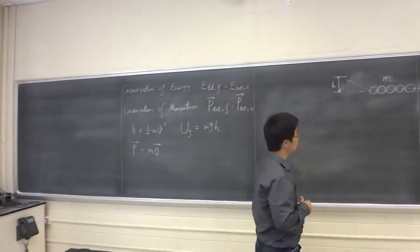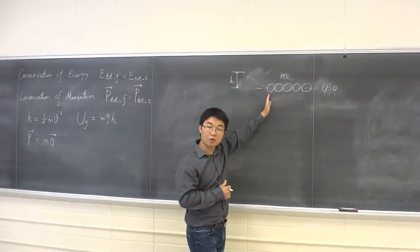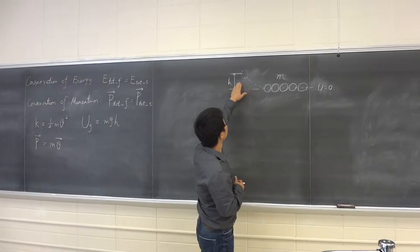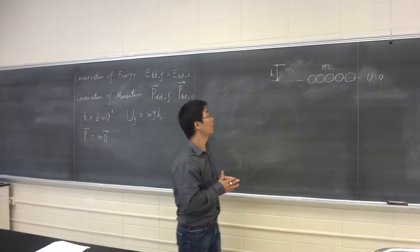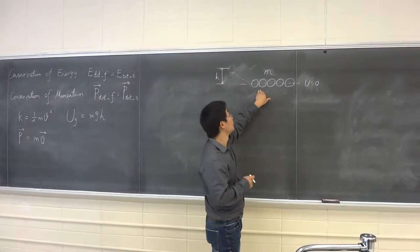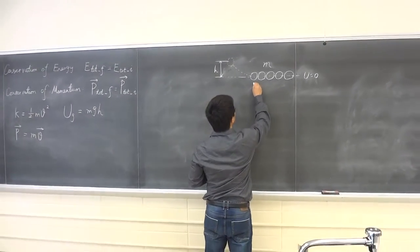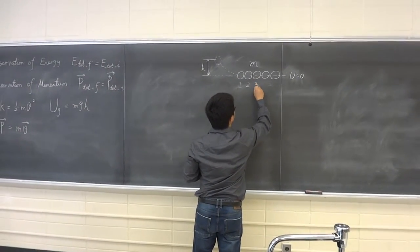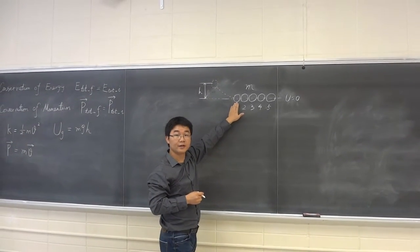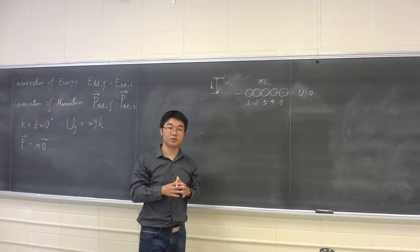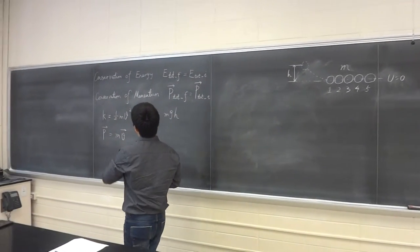So now let's analyze the process before the first ball strikes the second ball. Our initial state is when I release the first ball, and our final state is right before the first ball strikes the second ball. In this process, the system only has one object — just the first ball — so we're just going to use conservation of energy.